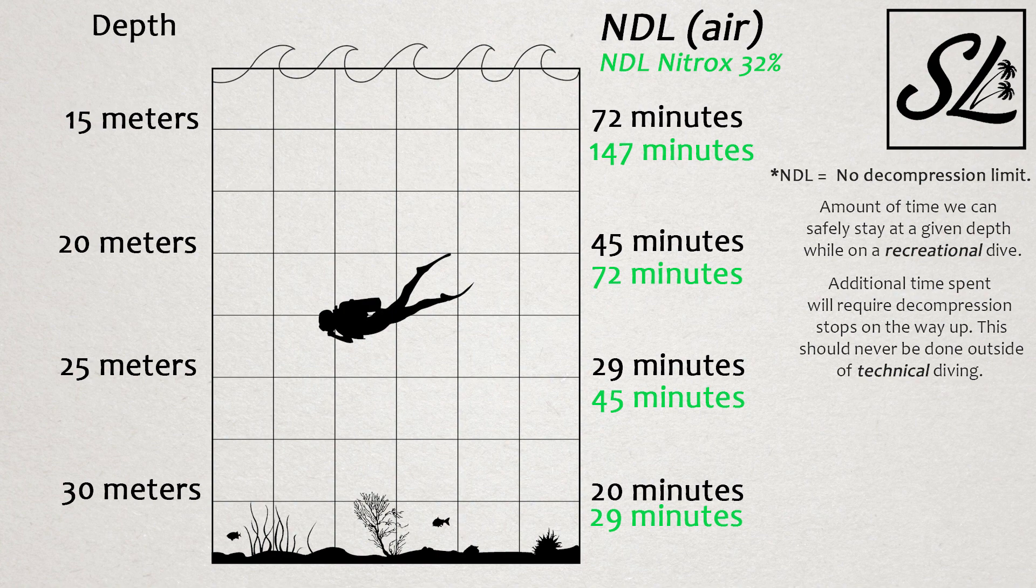Here we can see our no decompression limits on air, at 21% oxygen, compared to those on a blend of nitrox 32, at 32% oxygen. As we can see, our nitrox numbers written in green are considerably longer.